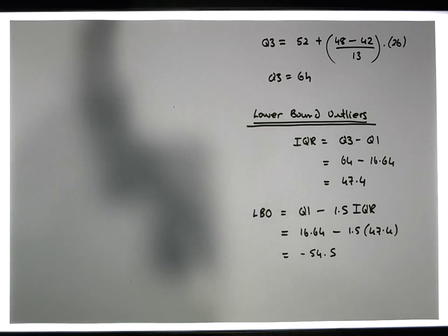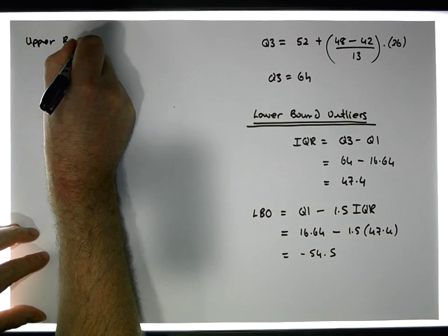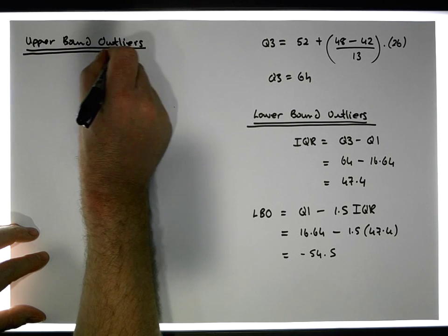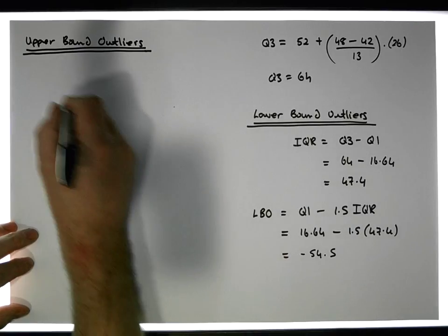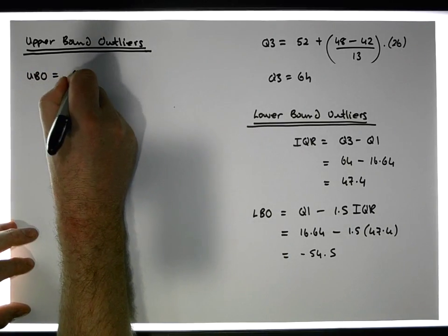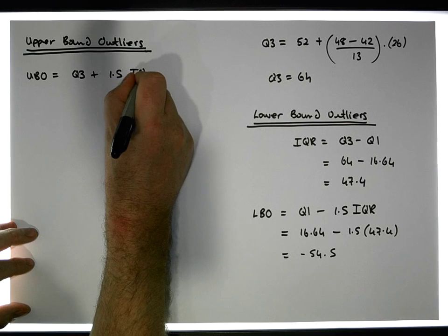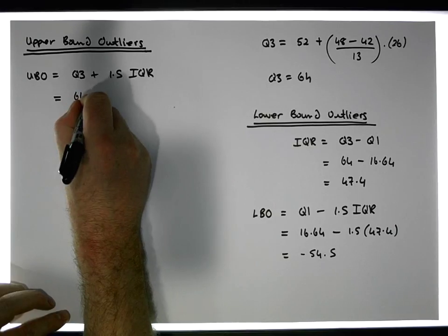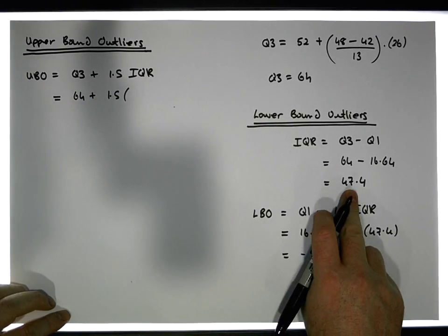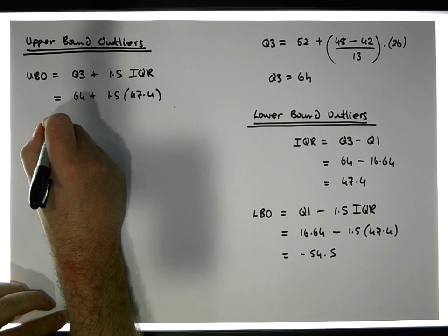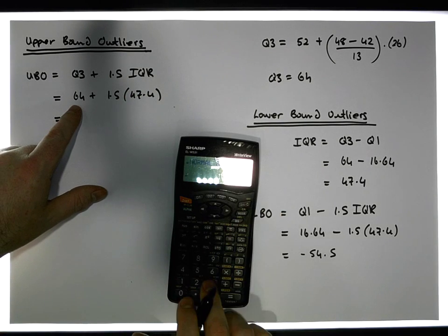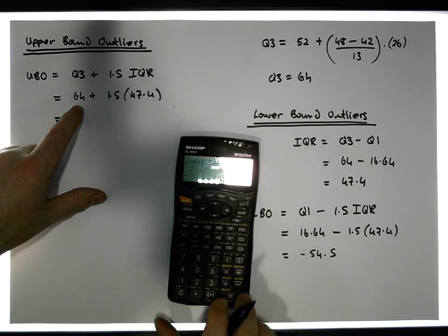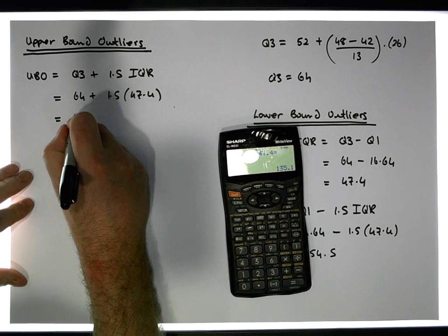Upper bound outliers are any values bigger than Q3 plus 1.5 times the interquartile range. So that's 64 plus 1.5 times 47.4, which gives us our upper bound outliers at approximately 125.1.